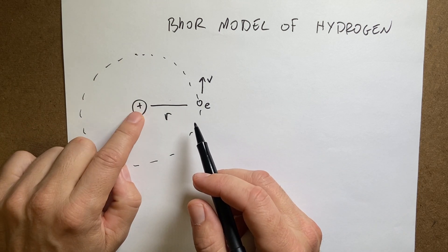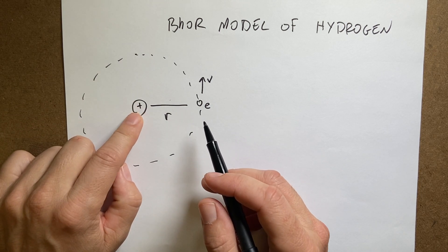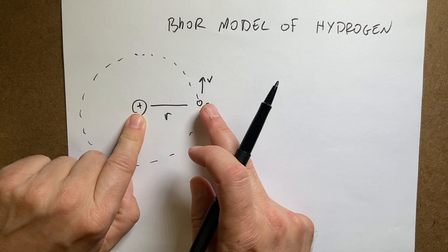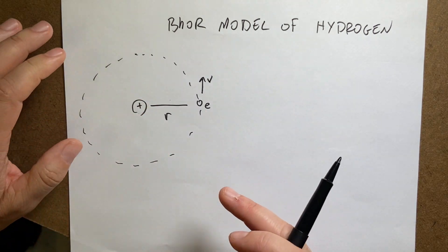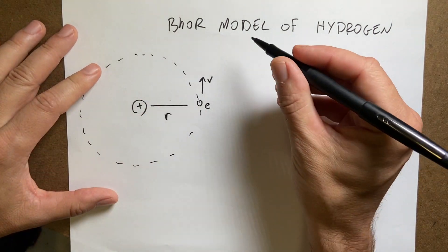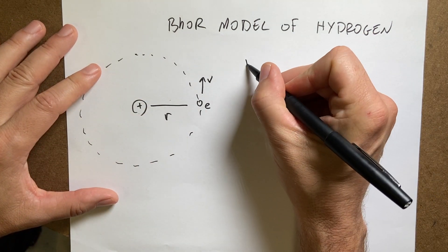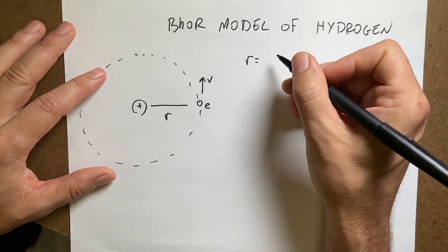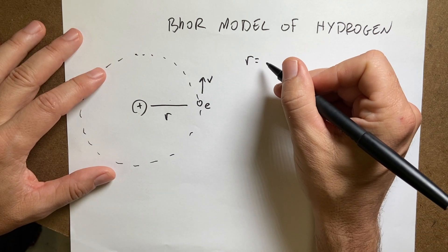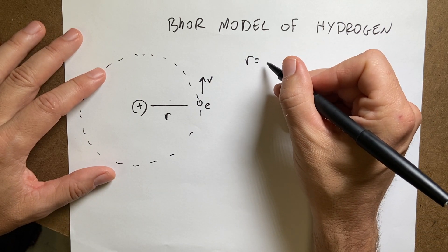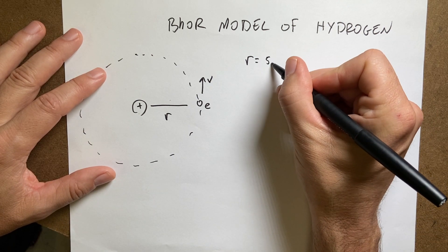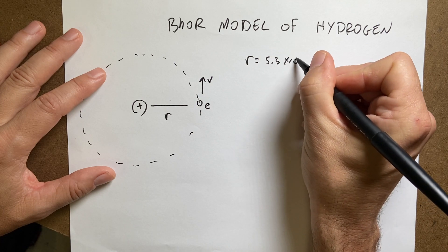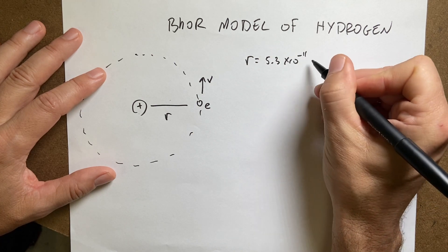So I have a positive proton that's stationary, and a negative electron orbiting around it. The orbital radius r is 5.3×10⁻¹¹ meters.